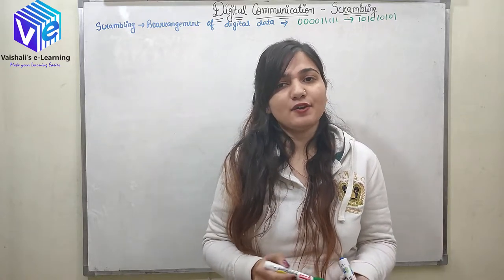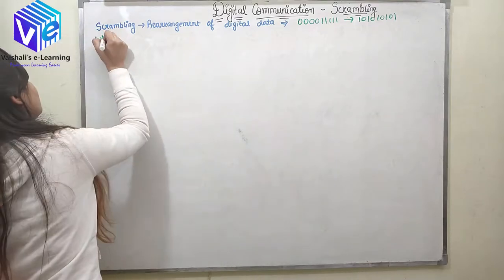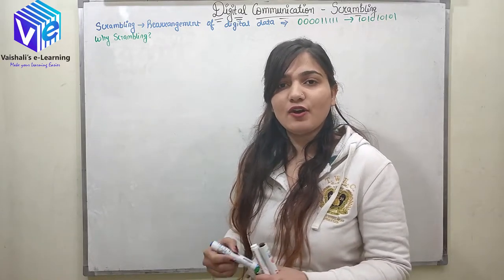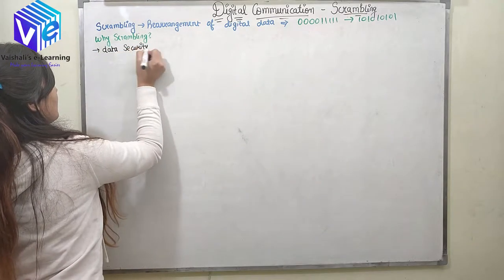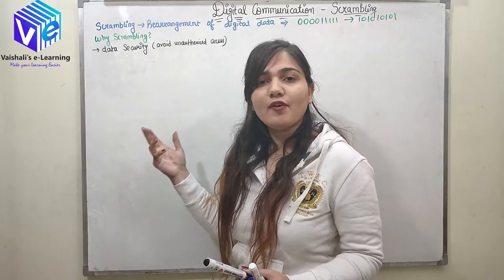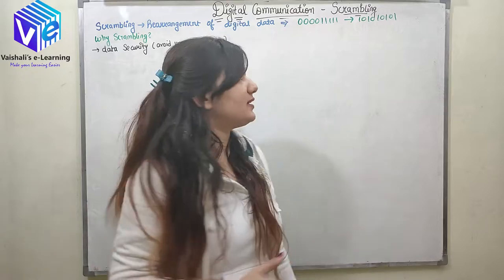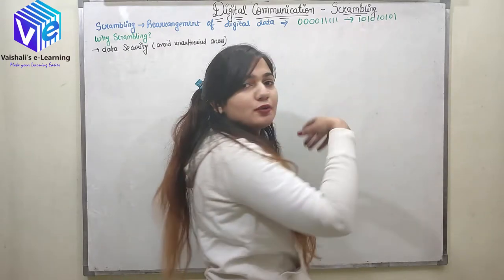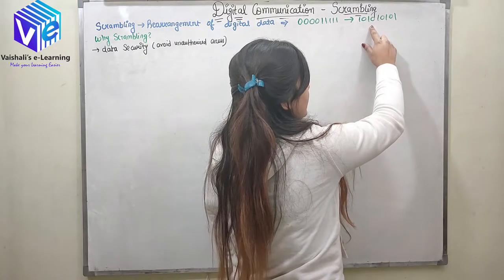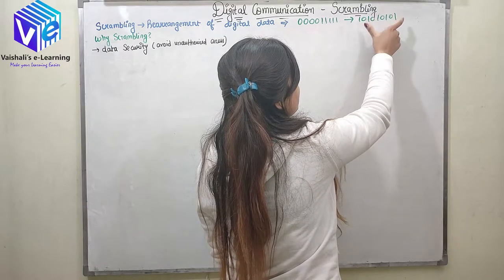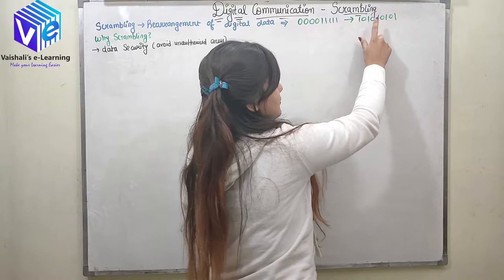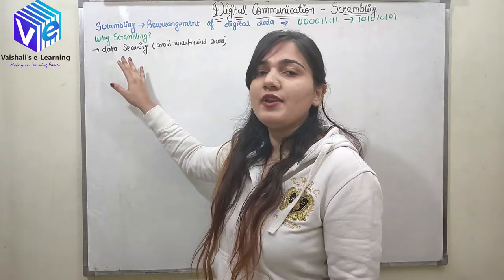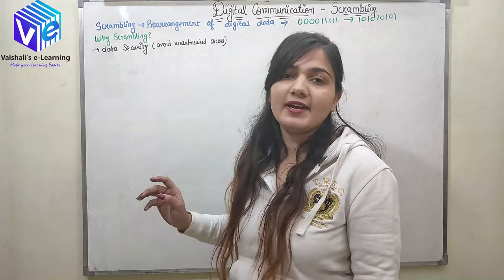The second thing in your mind would be: why is scrambling required? The first reason is data security. We can avoid unauthorized access of our data. If my original data was rearranged and transmitted, any other receiver who receives this scrambled data will not be able to decode it back to the original. So this is how we avoid unauthorized access and provide data security.